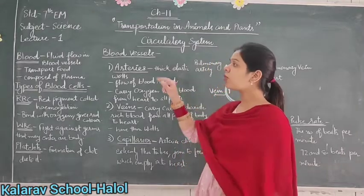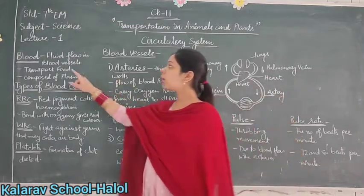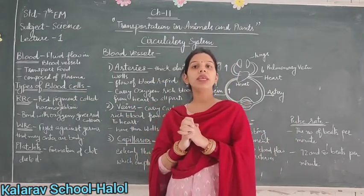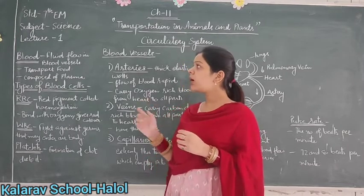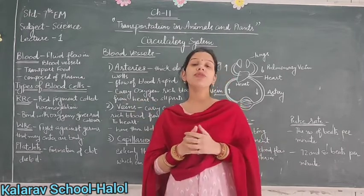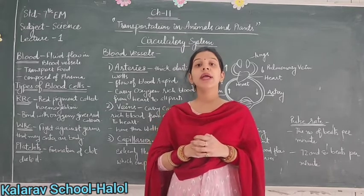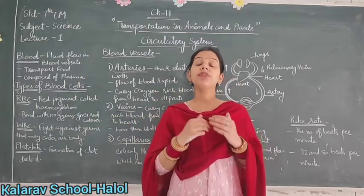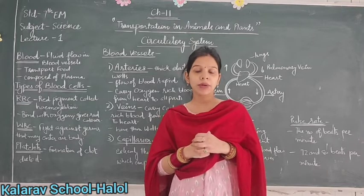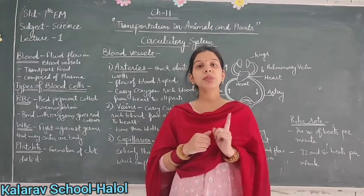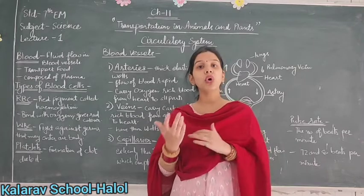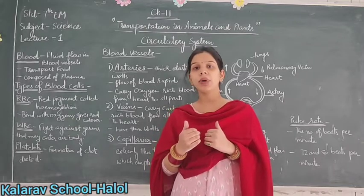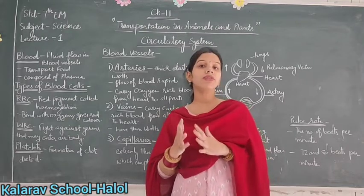The circulatory system involves firstly blood. Blood is the main component of the circulatory system. Blood is a fluid which flows in the blood vessels. It is composed of plasma, which contains different types of cells.